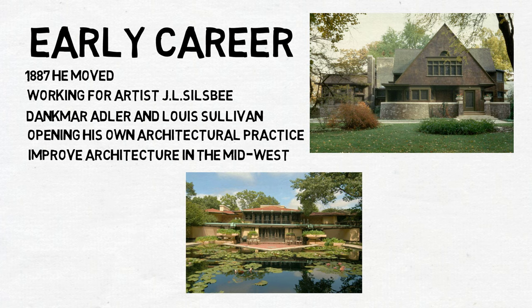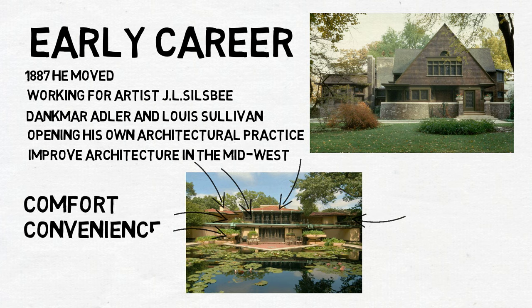Prairie houses were usually two storeys high with single storey wings, including ribbon windows, gentle sloping roofs, heavy-set chimneys, overhangs, and sequestered gardens. Prairie school architecture was known for its comfort, convenience, and spaciousness that were economically achieved, while avoiding elaborate compartmentalisation.